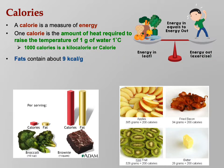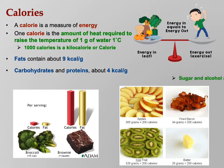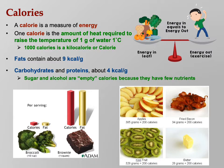Fats contain about 9 kilocalories per gram. Carbs and proteins contain about 4 kilocalories per gram. Sugar and alcohol are empty calories — they have few nutrients. Alcohol is around 7 kilocalories per gram.